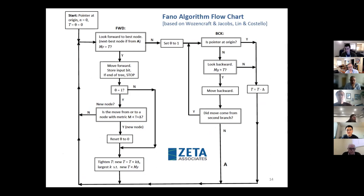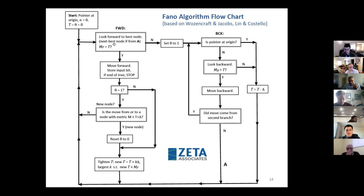I created a flowchart based on what I learned from Wozencraft, Jacobs, and Lin and Costello. There's a forward part and a backward-moving part. You start the threshold at zero, with a flag set to indicate you're planning to move forward. You're at the origin node. You compute the metric for the received channel output corresponding to the first two bits and compare it to the threshold.